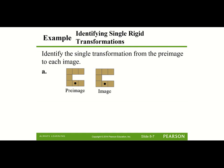Here they're asking us to identify the transformation going from the pre-image to the image. If we notice, the figure is still oriented the same way — the dot down here is still in the same spot — and the shape just moved over to the right. So this would be a translation or a slide.